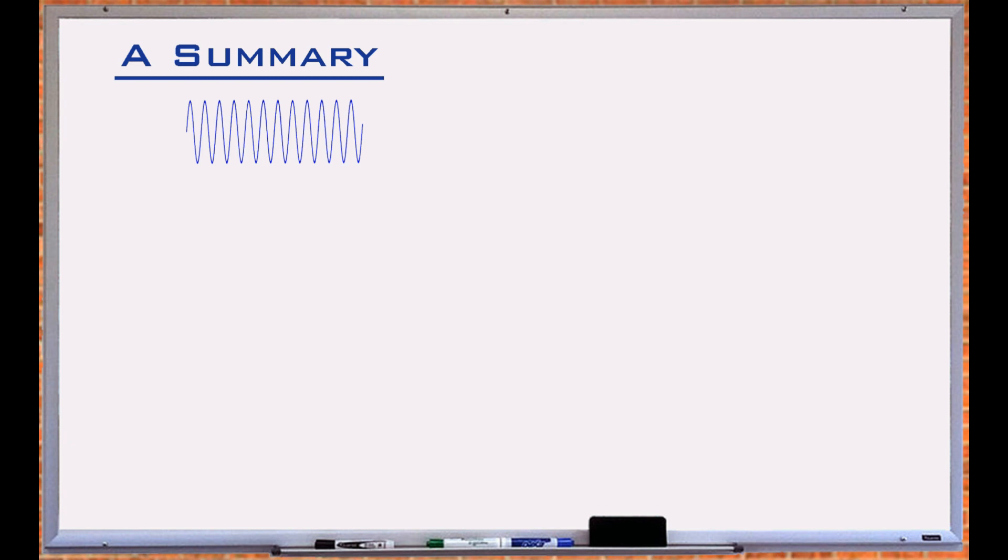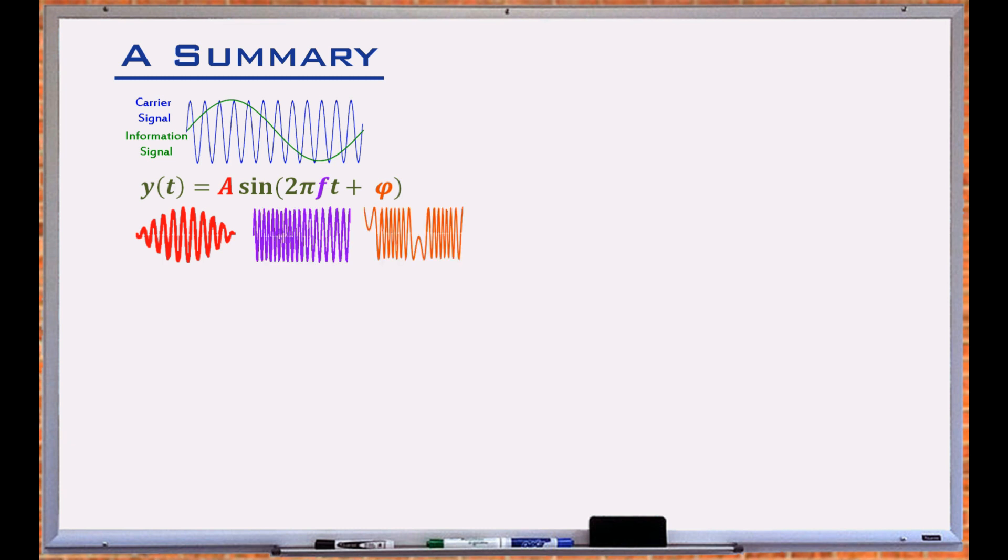Modulation concept is the process of varying one or more properties of a high-frequency periodic waveform, referred to as the carrier signal, with an information signal, to transmit the information. It is like throwing a paper note across a distance by wrapping it around a stone. Since a sine wave is completely defined by its amplitude, frequency, and phase, in a modulation process, one or a combination of these properties is altered by the modulation signal.